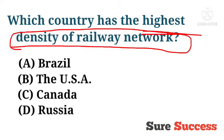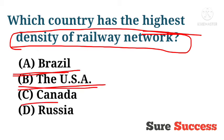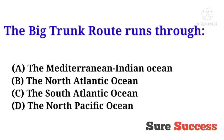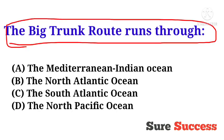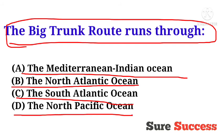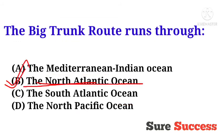Which country has the highest density of railway network? Options are Brazil, the USA, Canada, and Russia. The correct answer is the USA — it has the highest density of railway network. The big trunk route runs through the North Atlantic Ocean.